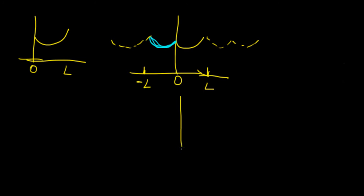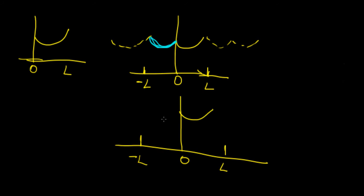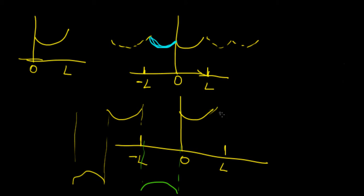Alternatively, we can expand this as an odd function, which means instead of mirroring it, we're going to have it flipped over — anti-symmetric. So the function is going to look like that instead, and when it's periodic it's going to keep repeating like this over and over again on both sides.